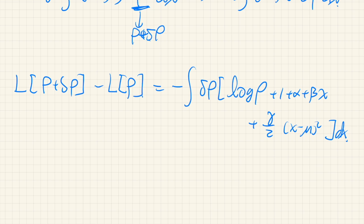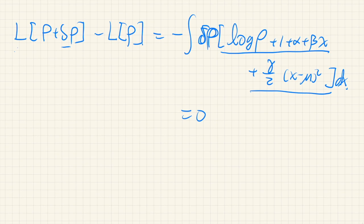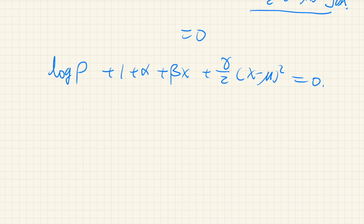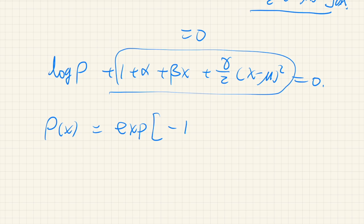At the maximum of the Lagrangian, this variation must equal zero. Since δρ is arbitrary, the bracketed expression itself must be zero: log ρ + 1 + α + βx + (γ/2)(x−μ)² = 0. Solving for ρ(x) gives ρ(x) = exp[−1 − α − βx − (γ/2)(x−μ)²].